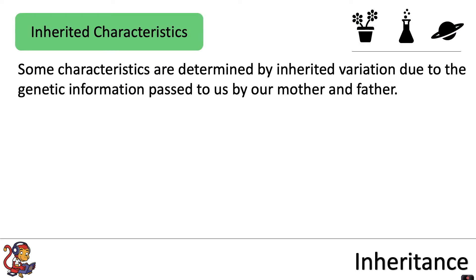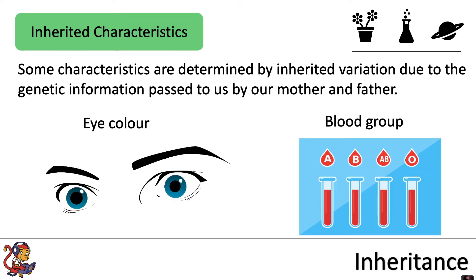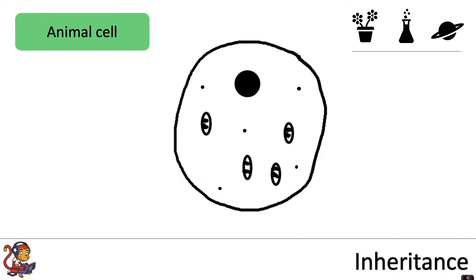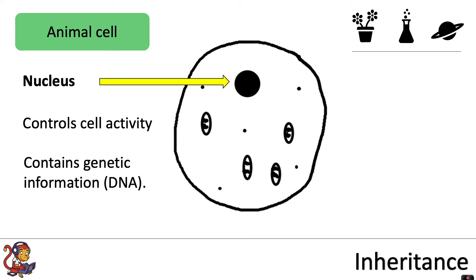Some characteristics are determined by inherited variation due to the genetic information passed to us by our mother and father. Examples of these include eye colour and blood group. In this video we're going to look at what we mean by genetic information and how this is passed to the offspring by the mother and father. We start by looking at the cell. Hopefully you'll be able to identify the nucleus, which controls cell activity and contains the genetic information or DNA.